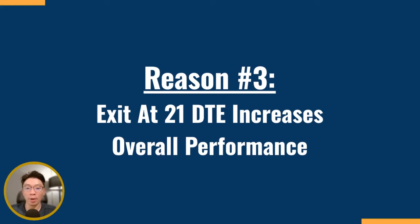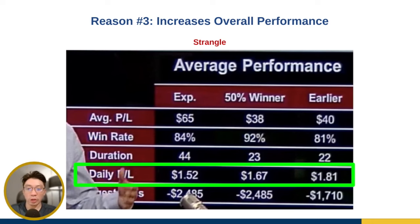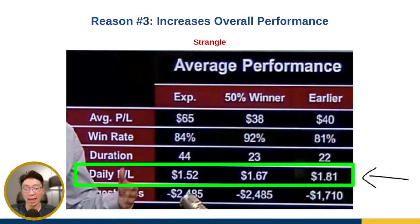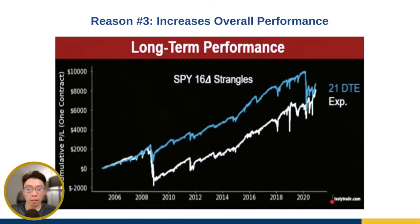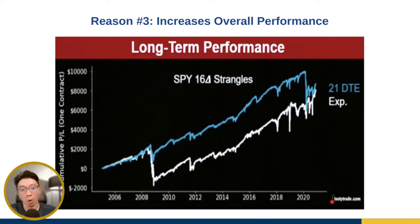This is the most important part — why we want to exit at 21 DTE versus holding to expiration is because over the long term we actually get better results. For the strangle study, the average daily P&L is actually higher when you exit at 21 DTE — you make more on a per-day basis. Looking at the long-term performance of the strangle on SPY comparing 21 DTE with holding to expiration over the past 14 to 15 years, even through the pandemic, the 21 DTE still does better than holding to expiration.